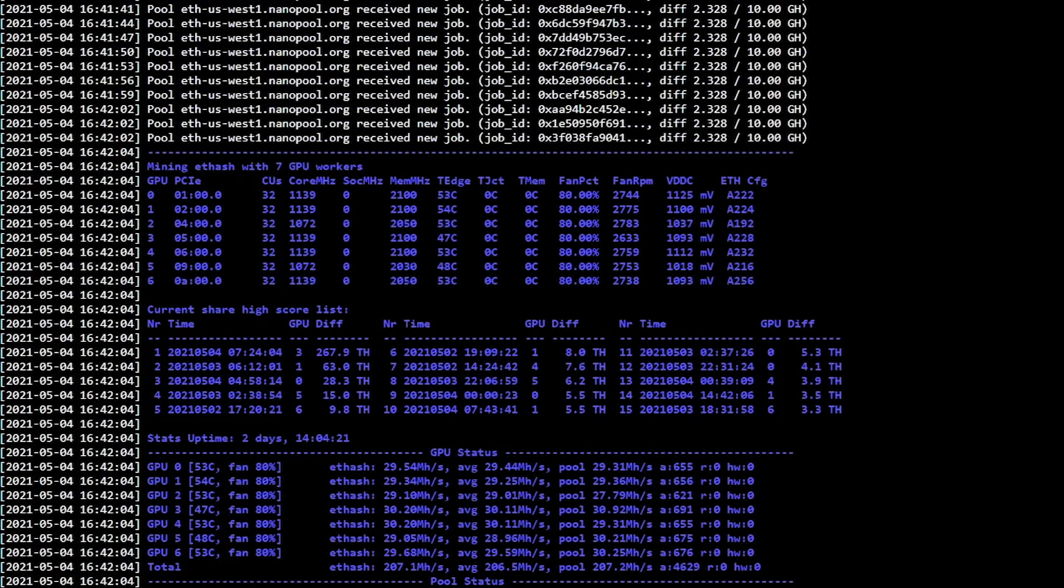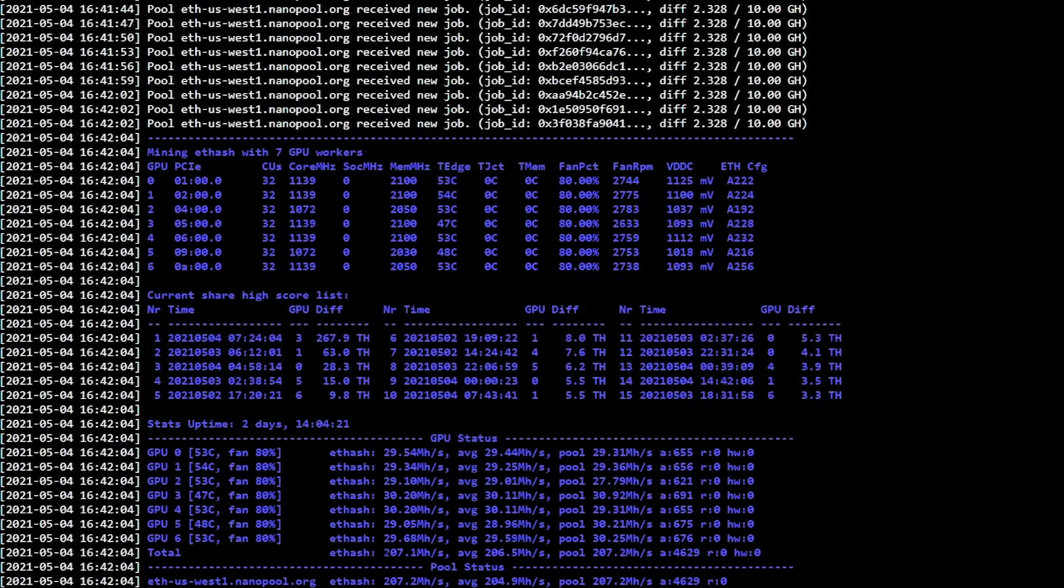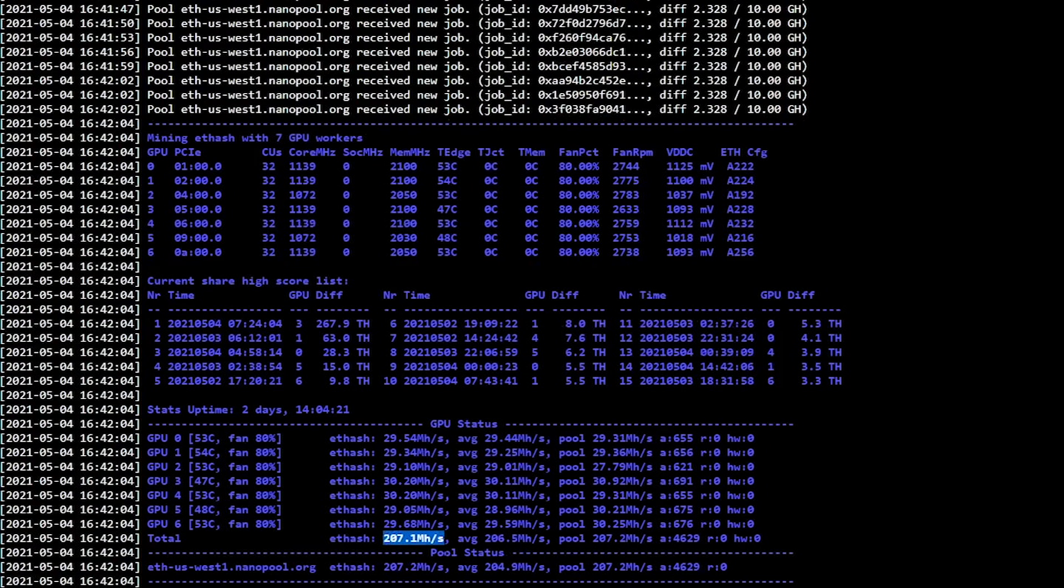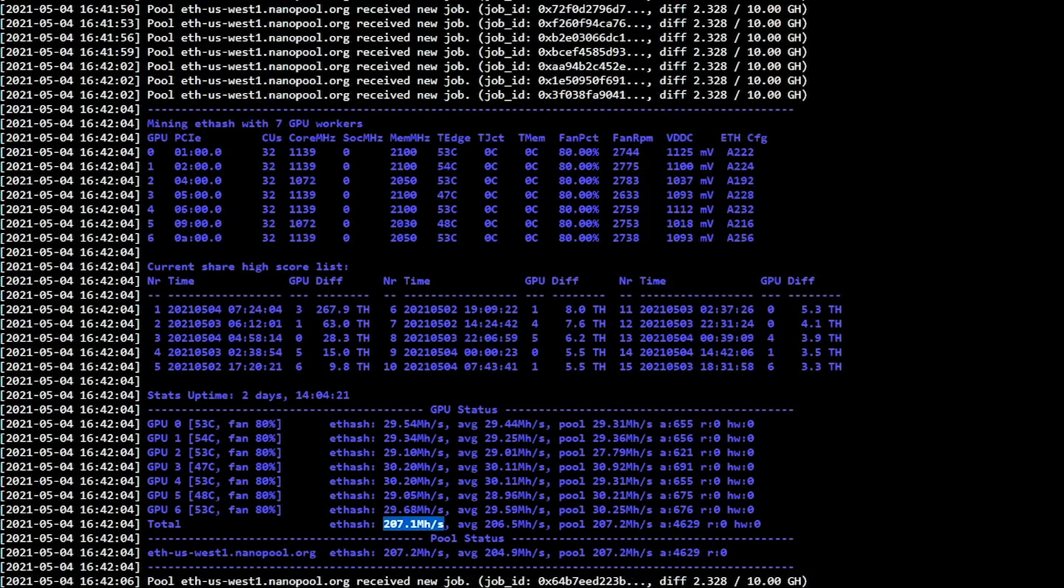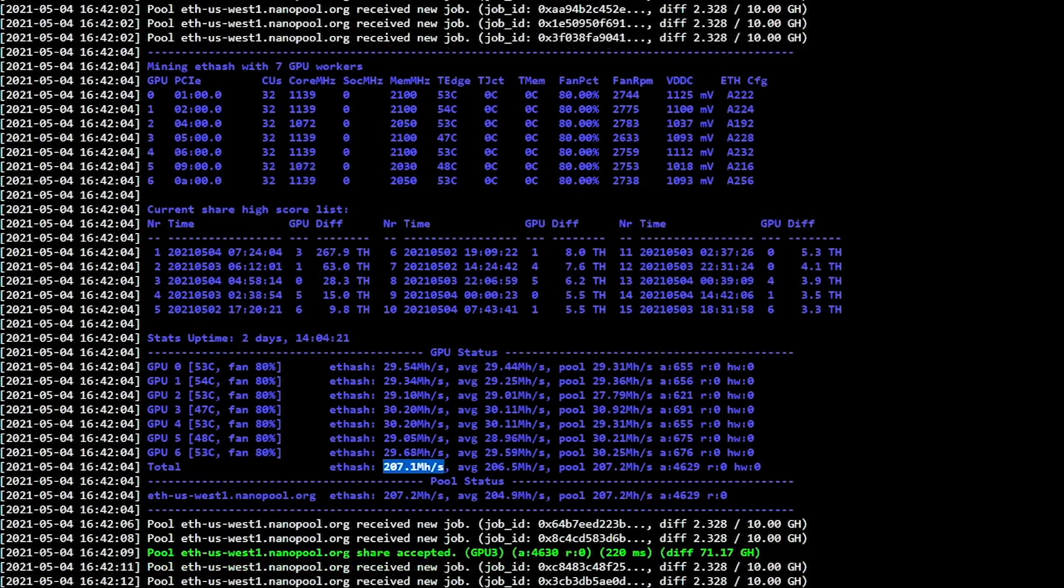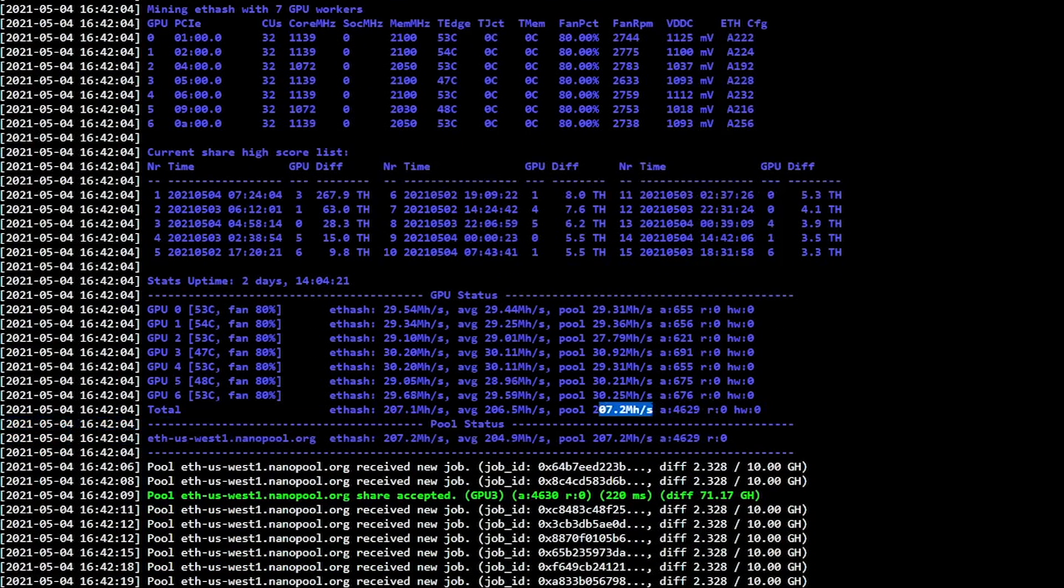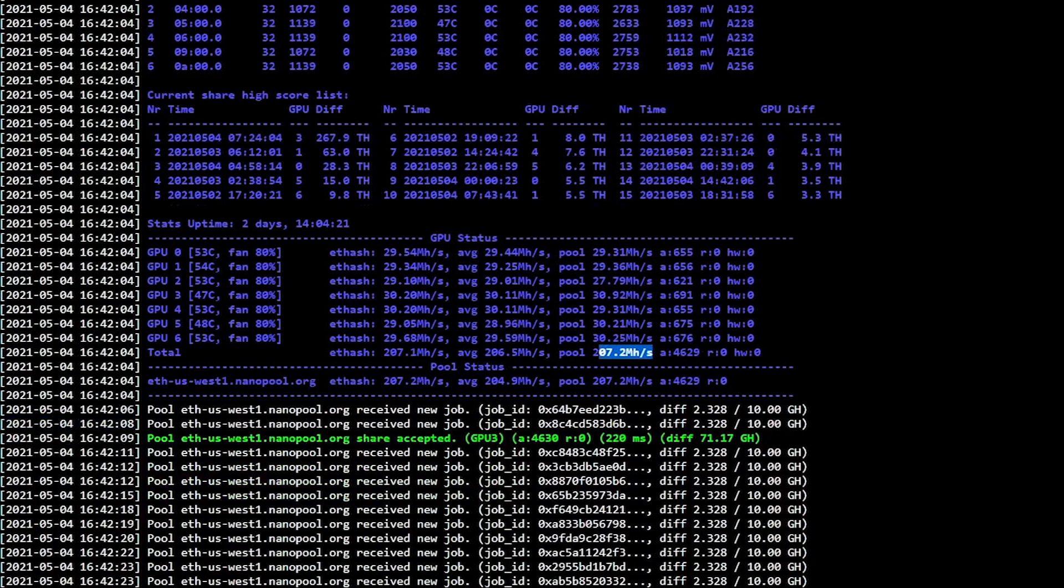So I'm actually mining at, hold on, it jumped around here. I'm actually mining at 207 million mega hashes. That's my true hash rate. That's how fast the GPUs are actually working. But this pool hash rate is how much the pool calculates that I am mining at. And that's what they pay me for.